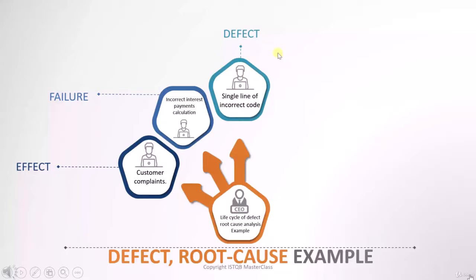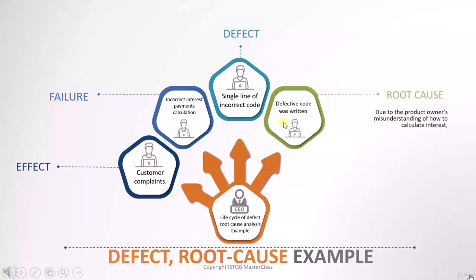Now when we further debug and try to find out why this particular code is not fine, we see that the code was not written correctly. But why? Because the product owner misunderstood how to calculate interest. So he doesn't know how to calculate the interest. But we will not stop here, because the product owner made a mistake — we have to understand why the product owner could not understand.